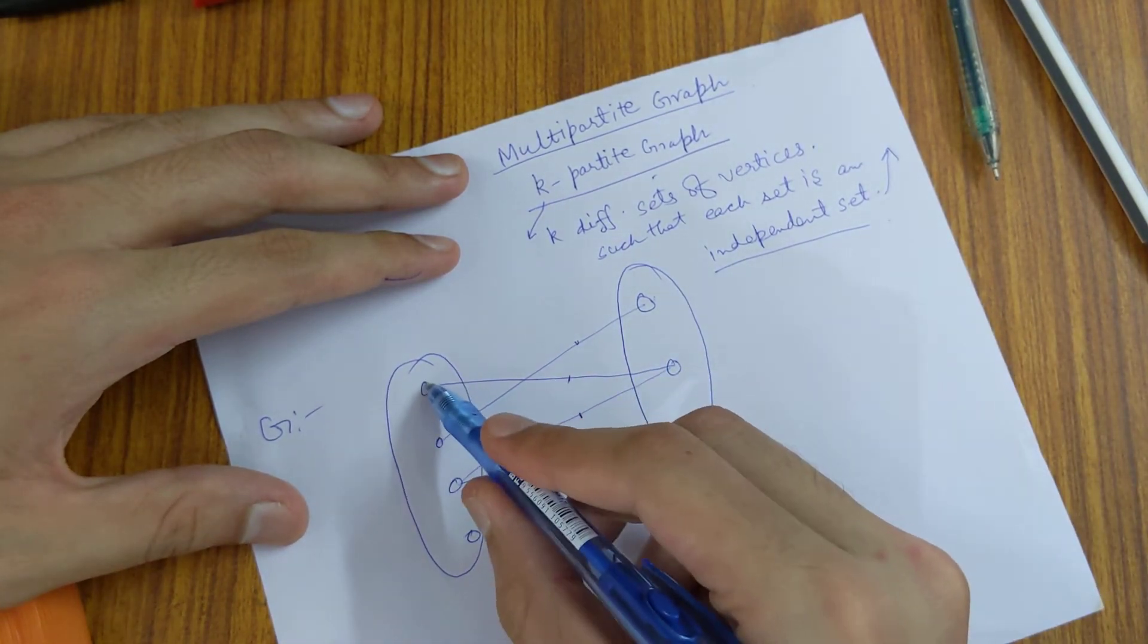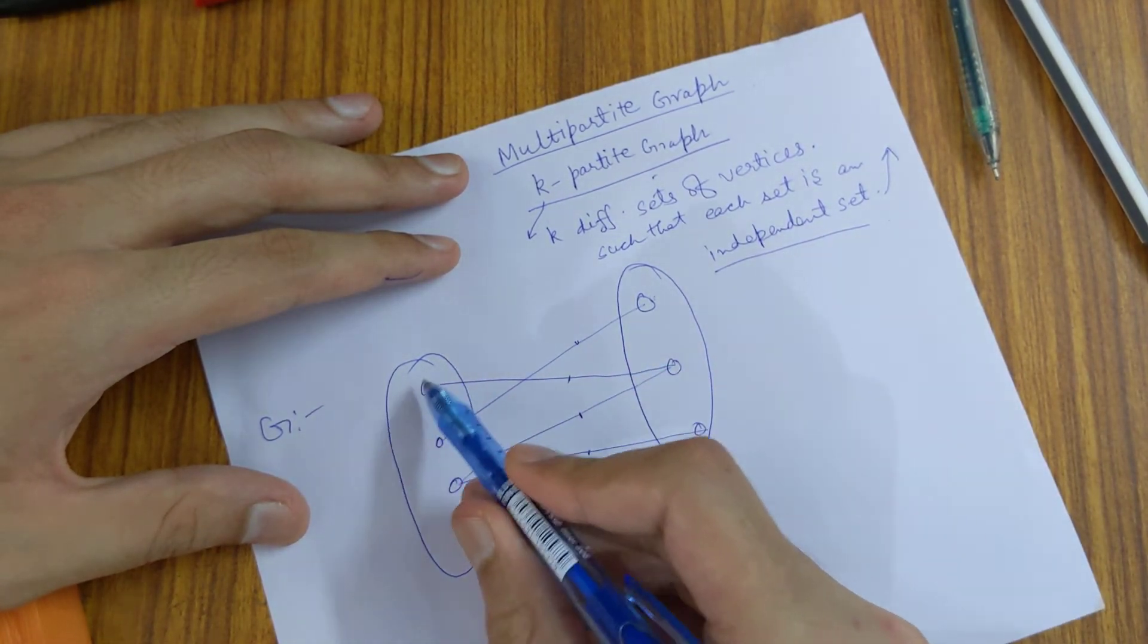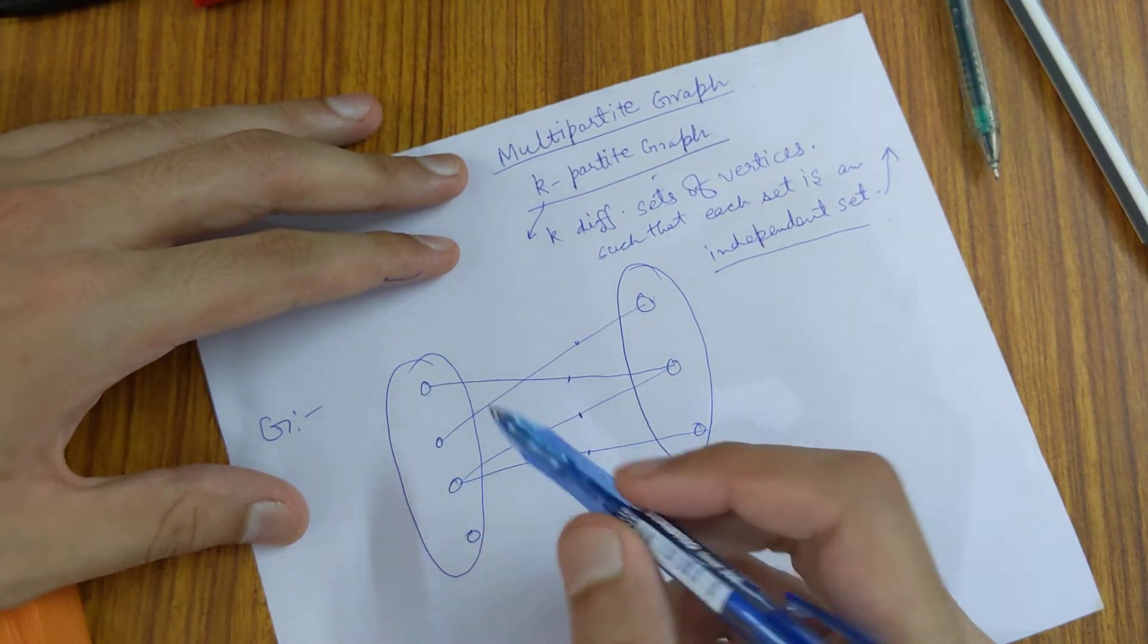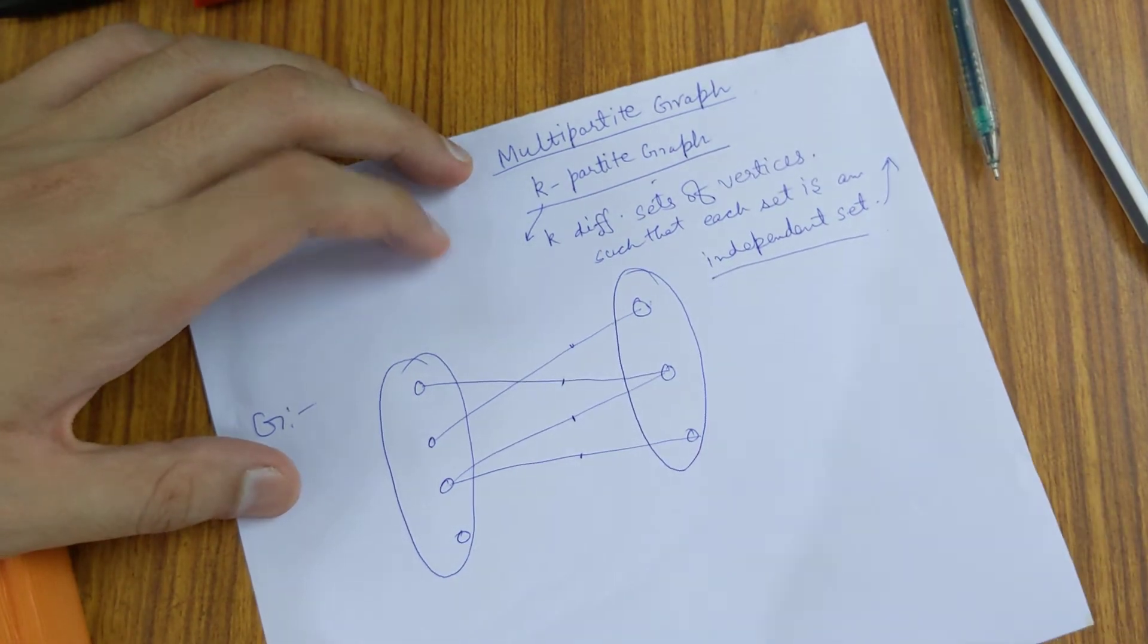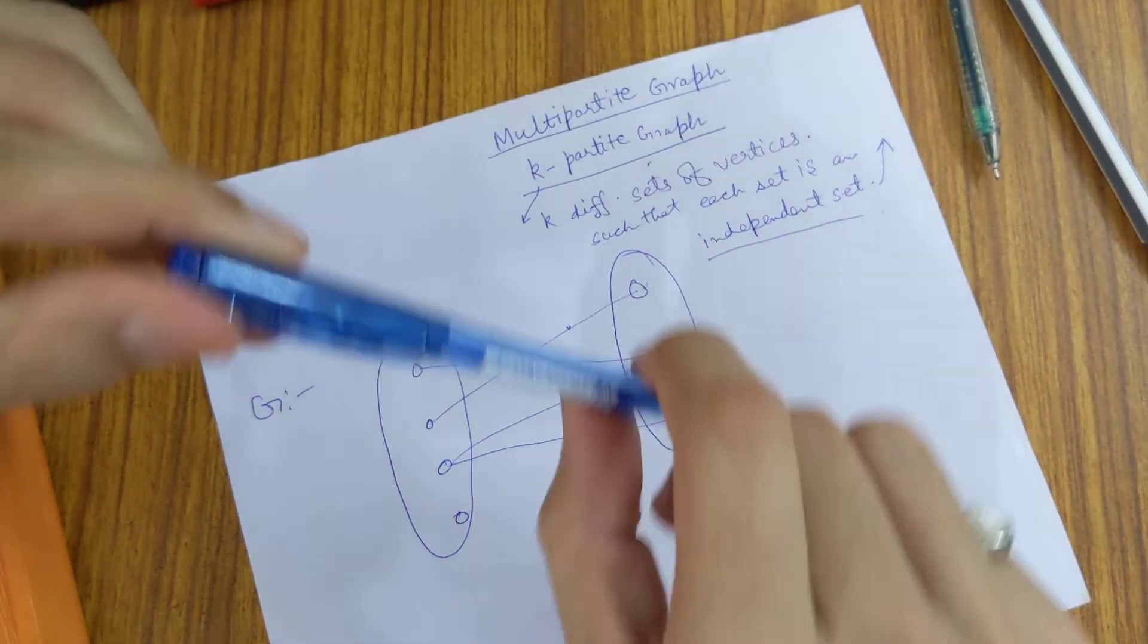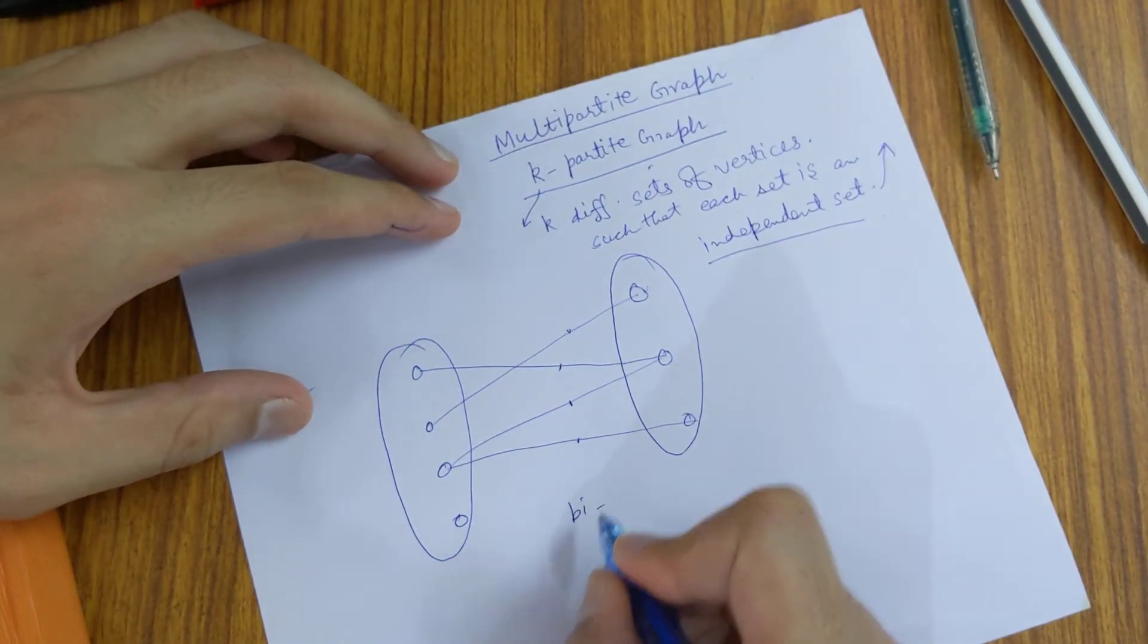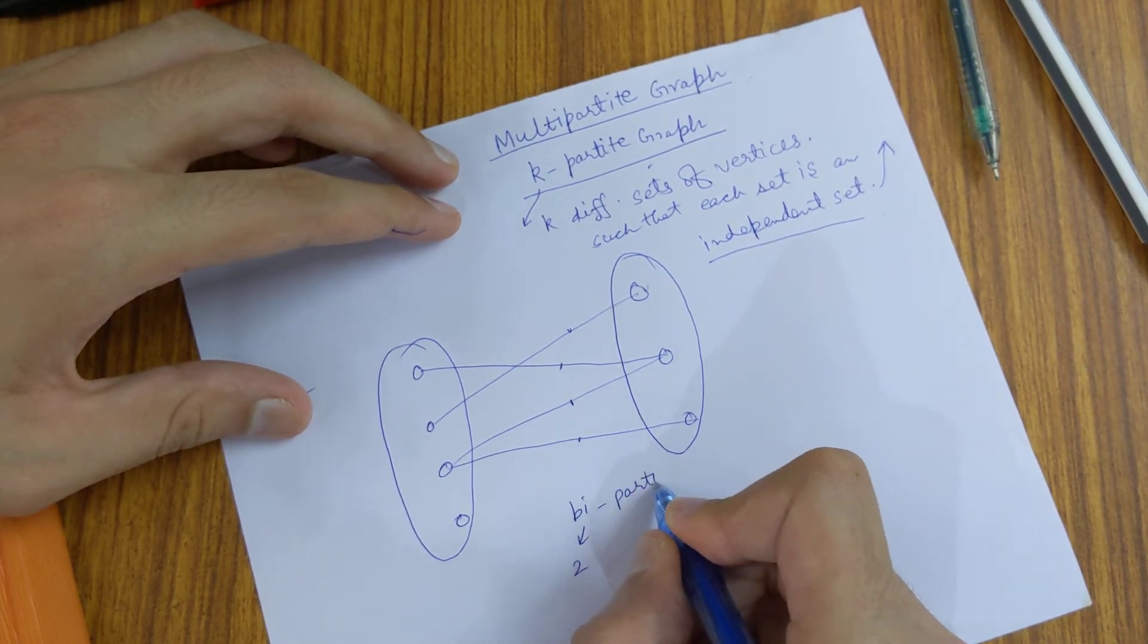These are from one set to another, but within one set we don't have any edges connecting them, so none of them are adjacent to each other. This is an example of a bipartite graph, meaning two partitions.